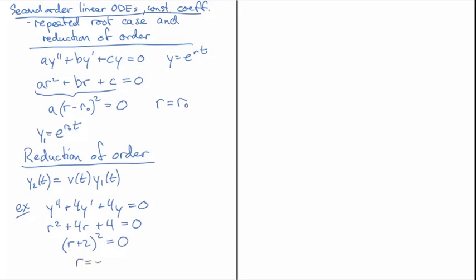That factors into (r + 2)² = 0 and so we now know that r = -2 and that's just a single r value, so we're in this case of a repeated root.